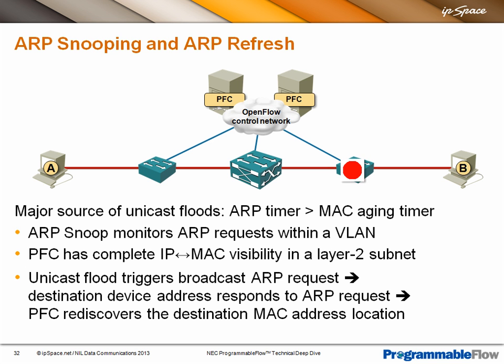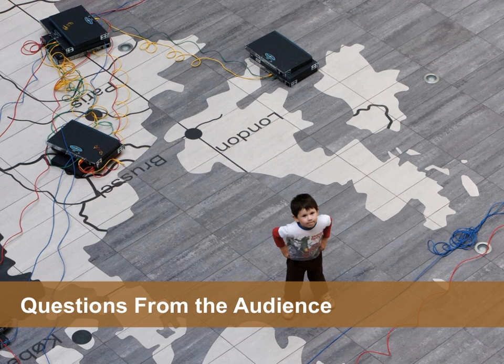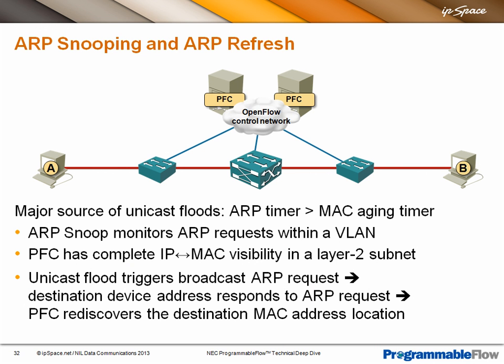Of course, if someone configures something like Microsoft Network Load Balancing where flooding is built into the system, there's nothing you can do. Regarding ARP: we handle broadcasts and multicasts the same from the flooding perspective, but PFC only listens to ARP requests. With OpenFlow, you can match on ARP packets specifically.